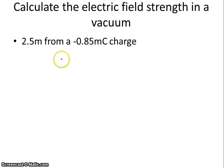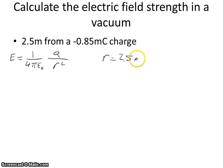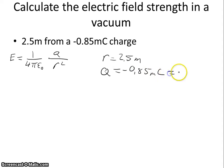We want to find the electric field 2.5 meters away from a negative 0.85 millicoulomb charge. We use the same equation: electric field strength equals 1 over 4 pi epsilon naught, times the charge q, divided by the distance squared. Since 2.5 meters is already in meters, no conversion is needed for r. However, we do need to convert the charge: 0.85 millicoulombs equals negative 0.85 times 10 to the minus 3 coulombs.